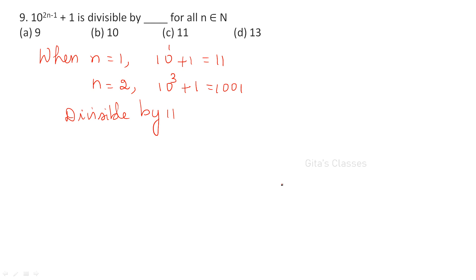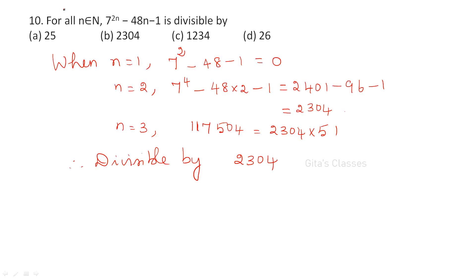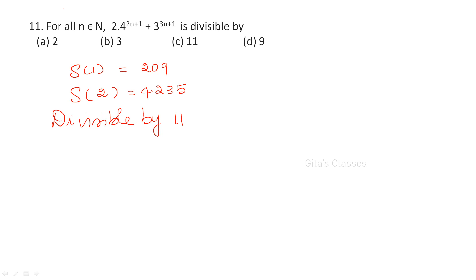Again, this is as usual divisible by 11: 10^(2n) - 1. Whatever is given, take it as S(n), then find S(1), S(2), etc. Then 7^(2n) - 48n - 1 — again the same procedure. For n = 1, the result is 0, which is divisible by any number, so you can say divisible by 2, 3, 0, 4. For n = 2 and n = 3, you again get 2, 3, 0, 4. Next is again divisible by 11.